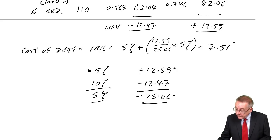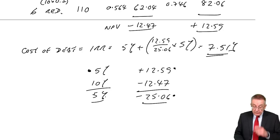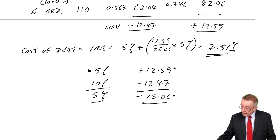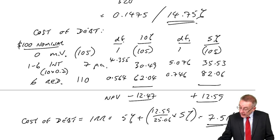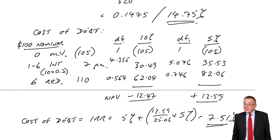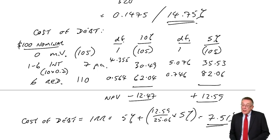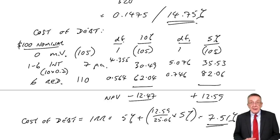At 5% we've got 12.59 positive, at 10% minus 12.47. Over a change of five percentages, the NPV falls from plus 12 to minus 12, in total it falls by 25.06. The internal rate of return, we need to get to zero, a fall of 12.59. 12.59 over 25.06 of five percent gives an internal rate of return of 7.51%. The cost of debt is substantially lower than the cost of equity.